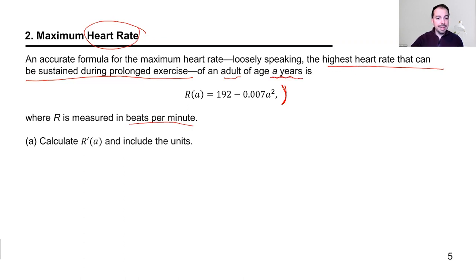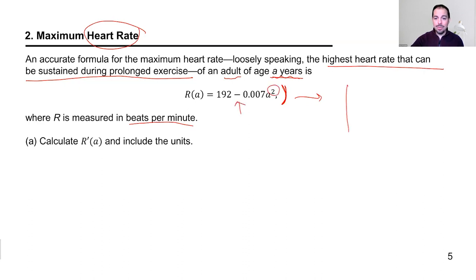R is measured in beats per minute and A in years. First, let's think about this function. Notice that R of A is a quadratic function of A that opens downward. When A equals zero, this entire term is zero, so we're at 192.